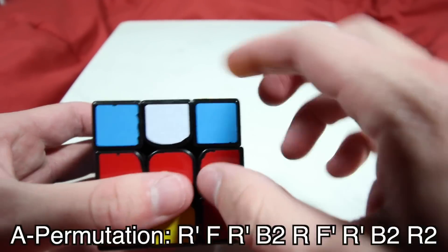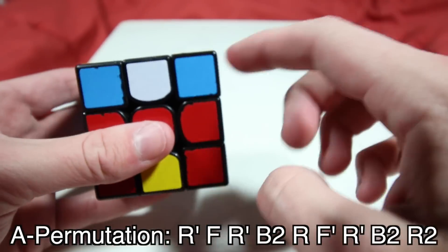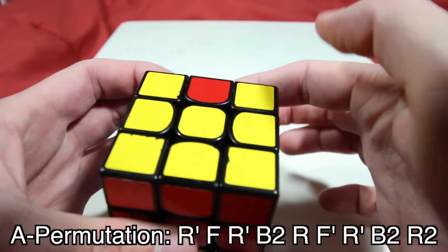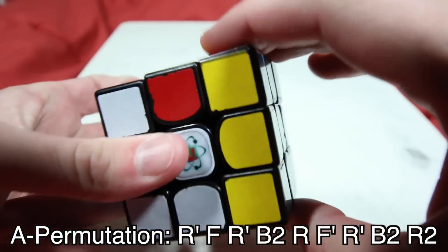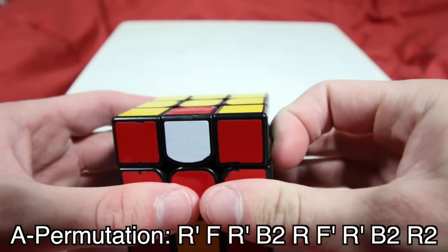So the next step is to permute corners, and this is the only other algorithm you're going to have to use, an A-perm. So you just find if there are any headlights or two corners of the same color, you put them in the back and then perform the A-perm. If there aren't any headlights, you just perform it anywhere and then it will create some headlights for you.